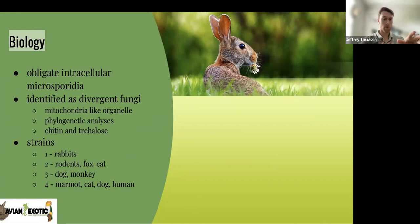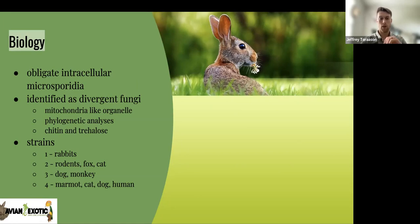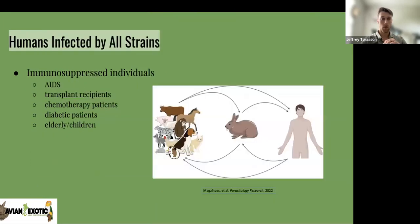Strains two and three affect rodents — two specifically affects rodents, foxes, and cats; three affects dogs and monkeys. Strain four affects marmots, cats, dogs, and humans. Humans can be affected by all the strains; strain four just happens to be the most common one that affects them.